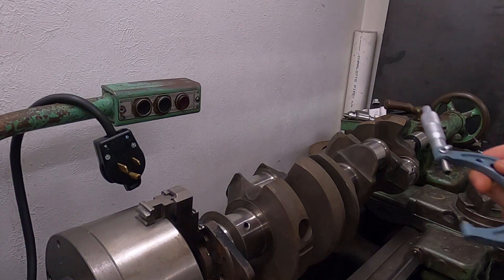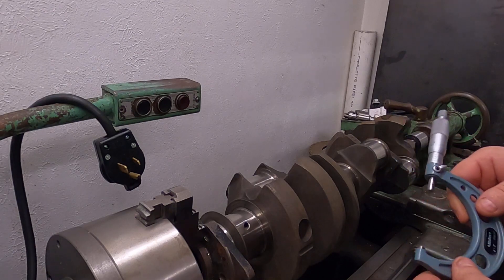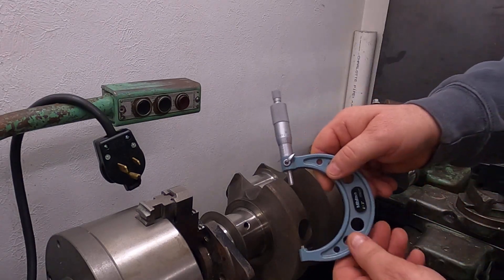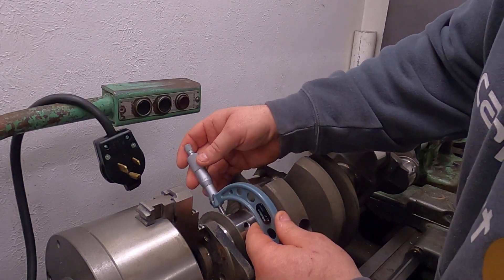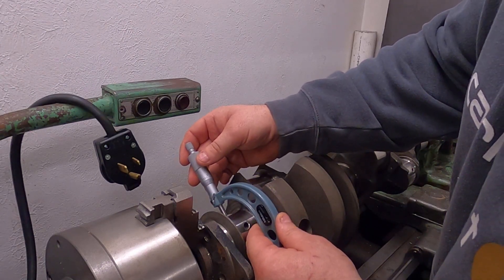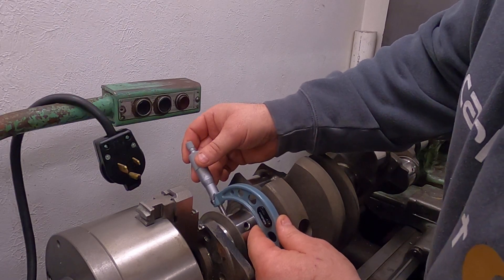Here I'm checking the crankshaft for size with a micrometer. I'm checking the main bearing journal - I've already done all the rods.